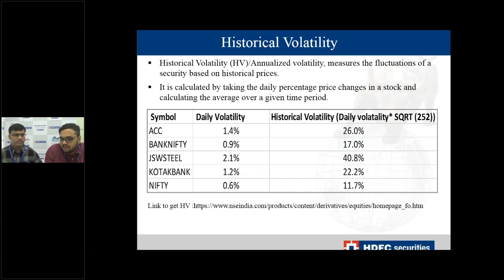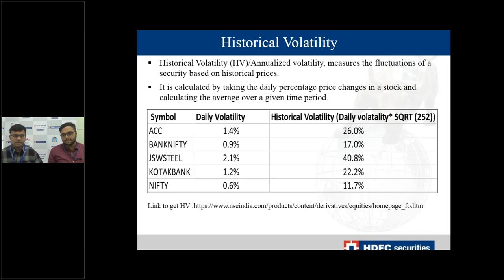Historical volatility measures the fluctuations of a security based on historical prices. We are trying to determine how volatile the security was in the last one year. The historical volatility is given in annualized figures, calculated by taking the daily percentage change in price and then annualizing it. There is a link on the NSE website given in the presentation where you can get the historical volatility of all the F&O stocks.